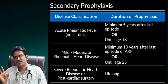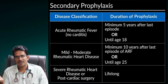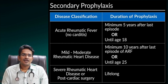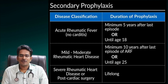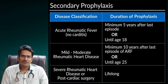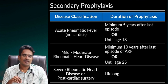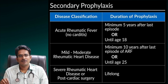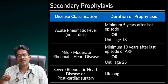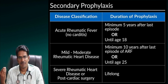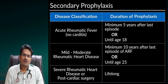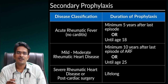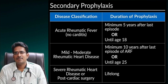For secondary prophylaxis, penicillin injections are given regularly to prevent recurrence. If there is no significant cardiac involvement, injections may be given for a defined period. In cases of severe rheumatic heart disease, lifelong penicillin injection prophylaxis is required.